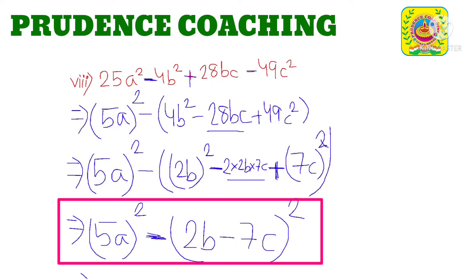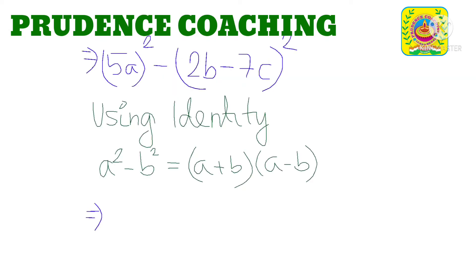Now if we look at this particular expression, we can compare it with the expression a square minus b square. So now comparing this given expression with the identity a square minus b square, here a is 5a and b is 2b minus 7c.